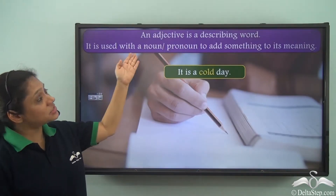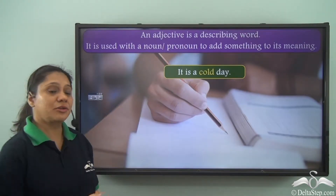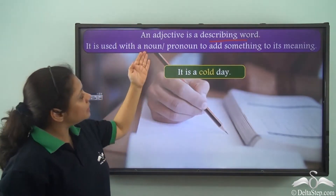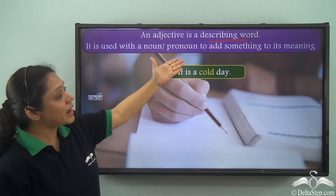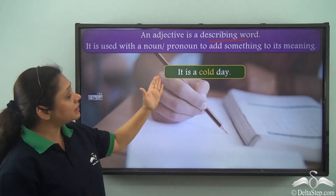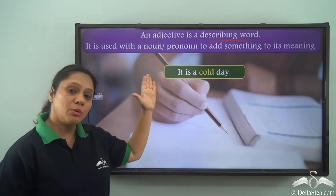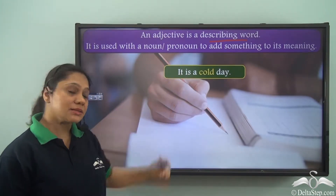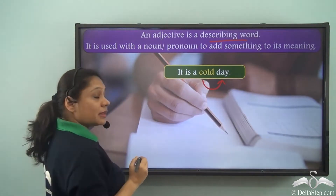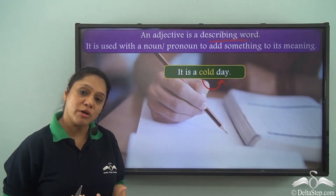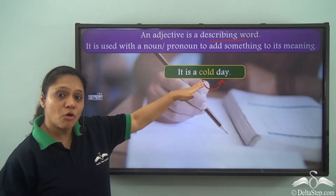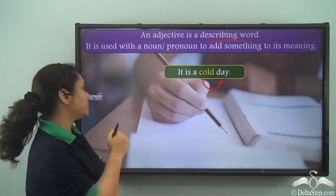We know that an adjective is a describing word. It is used with a noun or a pronoun to add something to its meaning. For example, it is a cold day. Now in this sentence, the word cold is describing the noun 'day' and giving us more information about it. Hence the word cold is an adjective here.